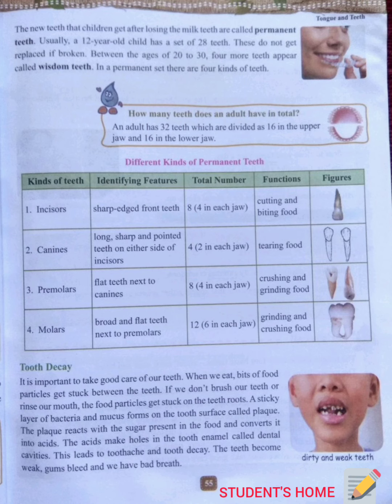Between the age of 20 to 30, four more teeth appear called wisdom teeth. In a permanent set, there are 4 kinds of teeth: incisors, canines, premolars and molars. You can see their identifying features, total number, functions and figures in the table.